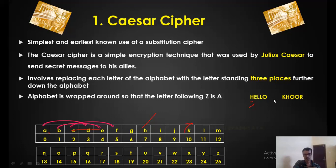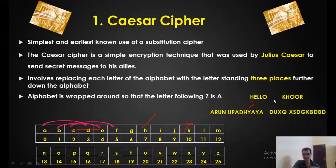Similarly, my name is Arun Upadhyaya. If I convert my name into encrypted form by adding plus 3 to all the individual alphabets, I get a completely different string. Instead of sending 'Arun Upadhyaya,' I will send this encrypted version, which is meaningless — an unintelligible language nobody can understand. This is the cryptographic technique used by Julius Caesar.